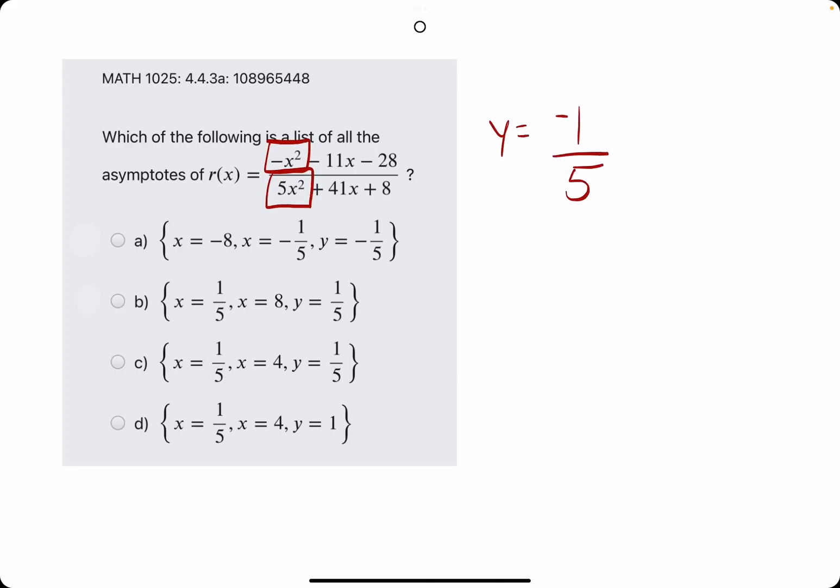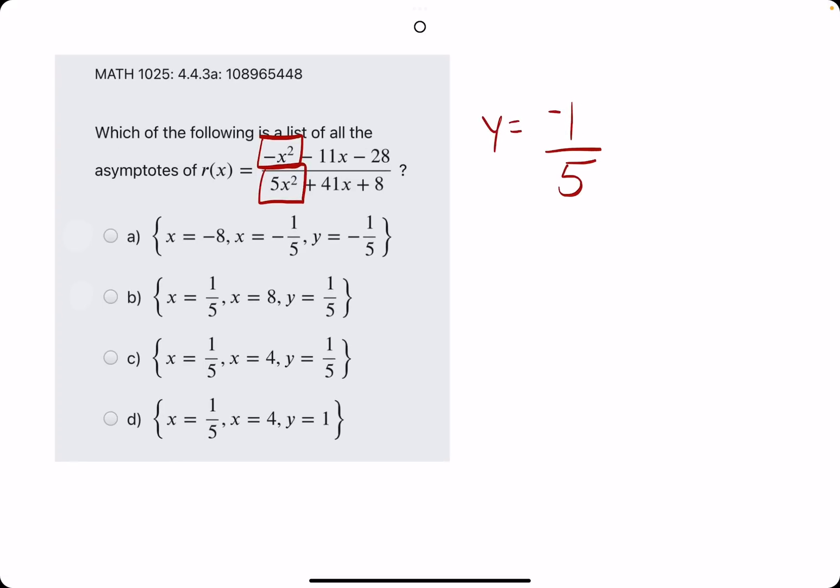So, negative 1 on top and 5 on the bottom. Negative 1 fifth equals y. y equals negative 1 fifth is our horizontal asymptote. So, we see that in A. And that's it. So, just based on that, A will be our answer.